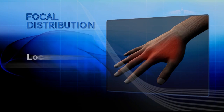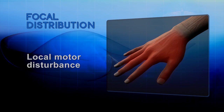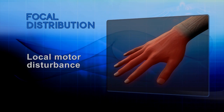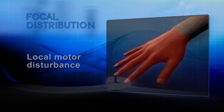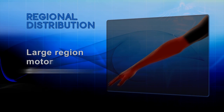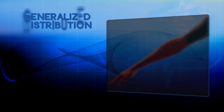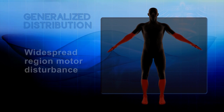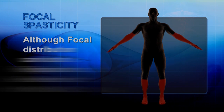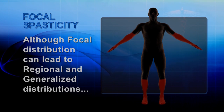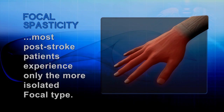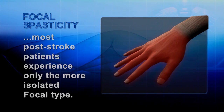The term focal distribution indicates that spasticity is isolated — it is considered a local motor disturbance that affects only a single part of the body. Regional distribution is a motor disturbance that involves a large region of the body, and a generalized distribution involves widespread regions of the body. Although focal spasticity can sometimes lead to a regional or even generalized distribution, most post-stroke patients experience only the more isolated focal type.